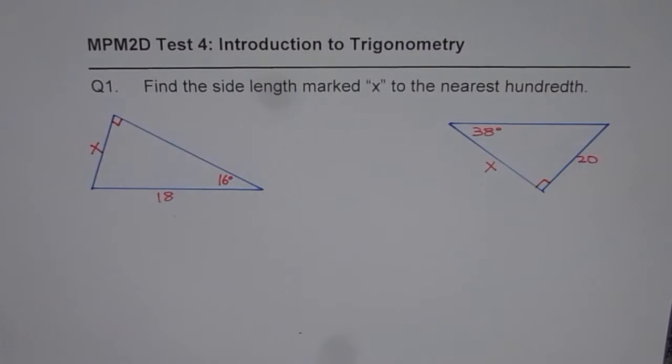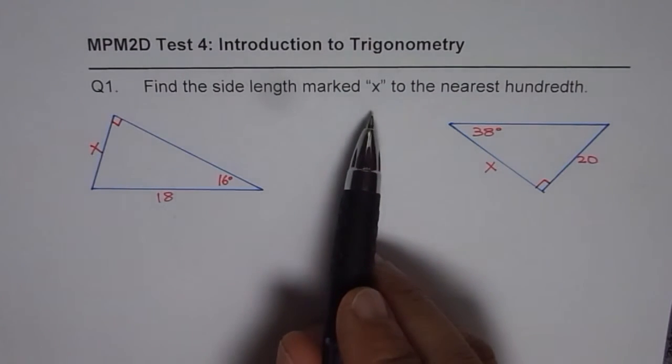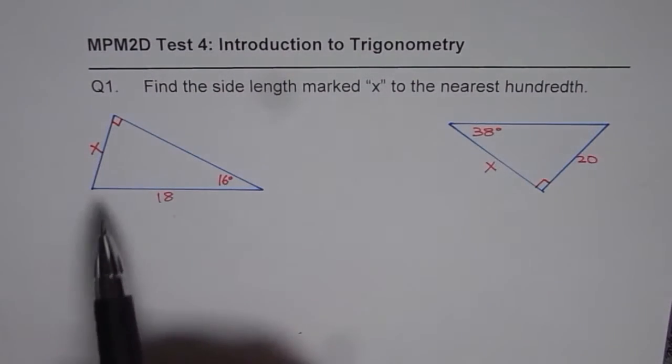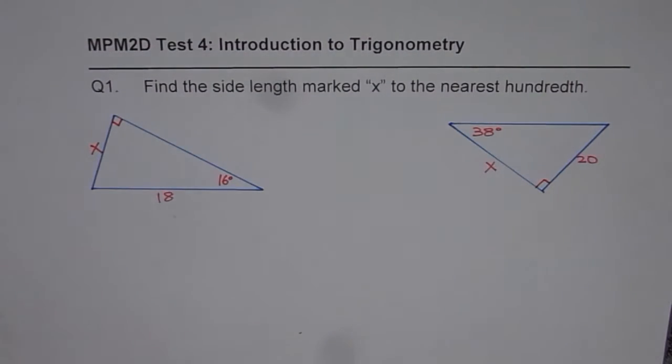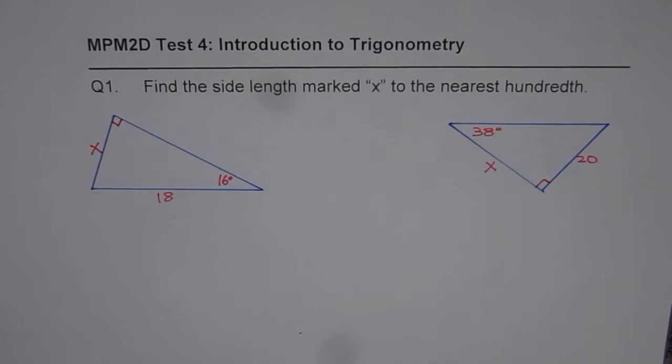Here is the first one for us to discuss. Question number one: find the side length marked X to the nearest hundredth. We are given two different triangles and we need to find out X, the side length in these two different triangles.